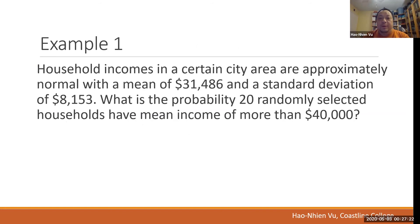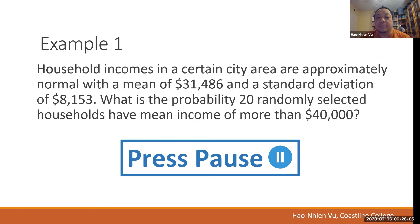Now let's take a look at this problem. Household incomes in a certain city area are approximately normal with a mean of $31,486 and a standard deviation of $8,153. What is the probability that 20 randomly selected households have a mean income of more than $40,000? Is it a CLT problem? And how do we solve it?